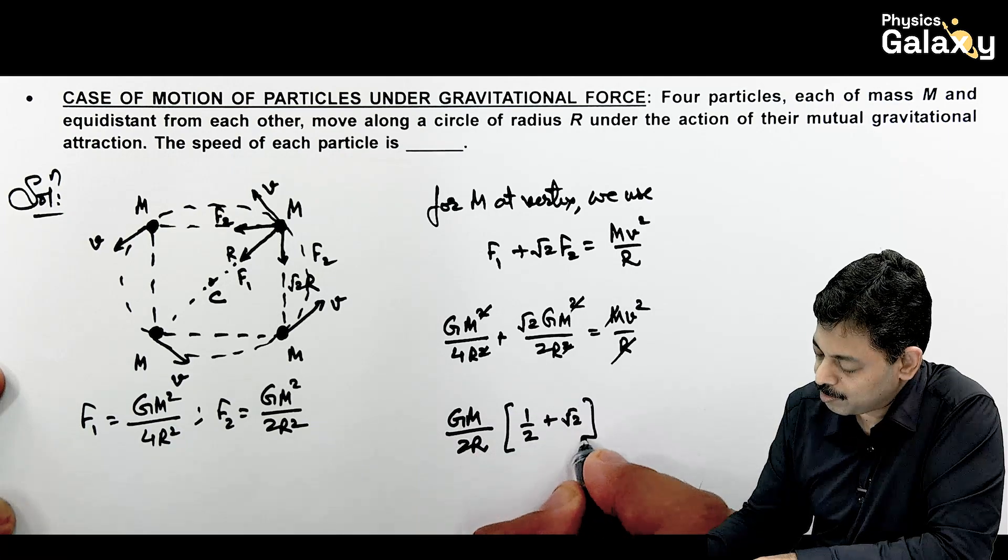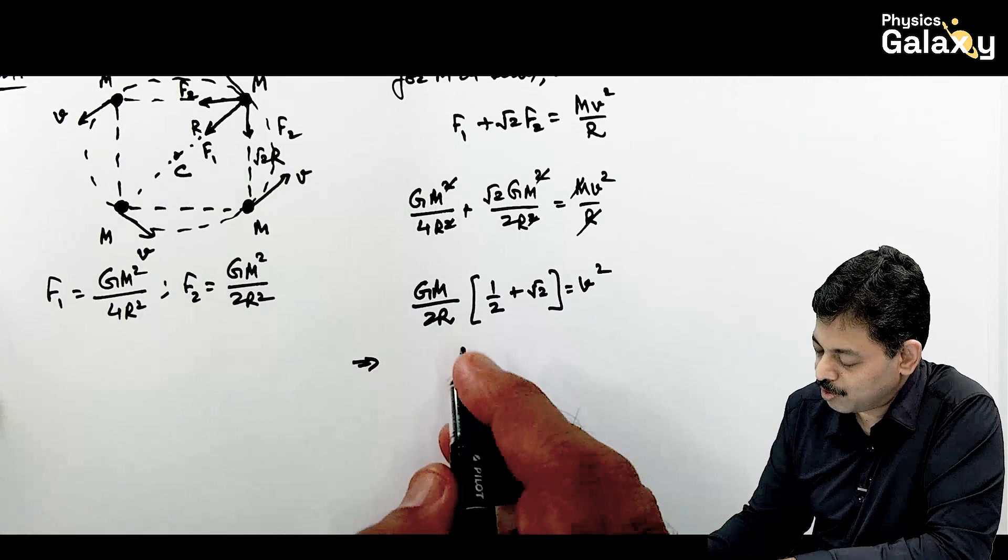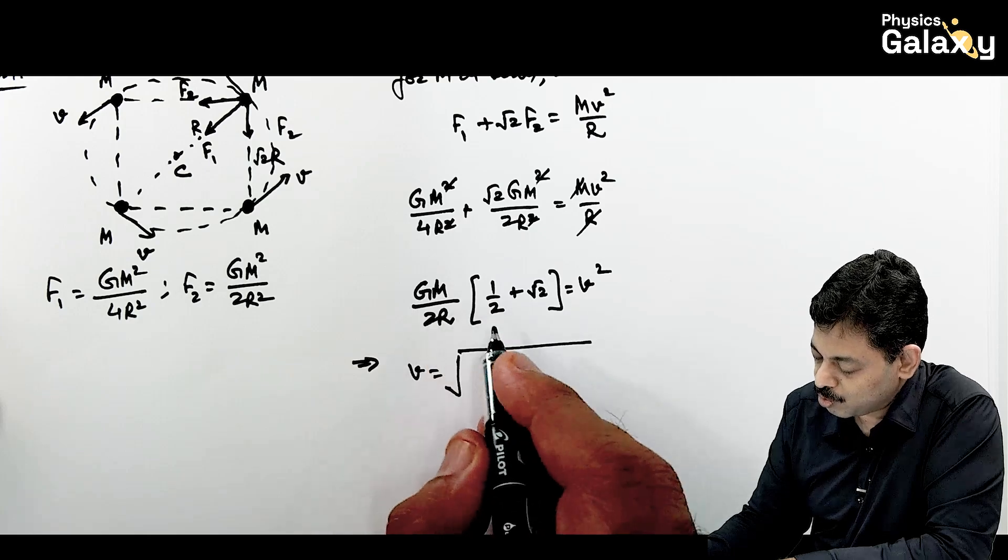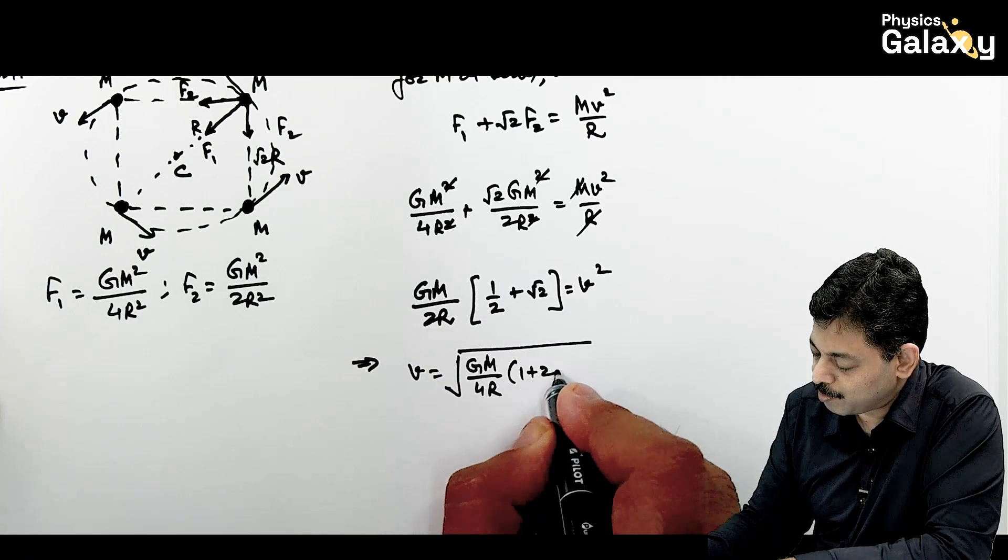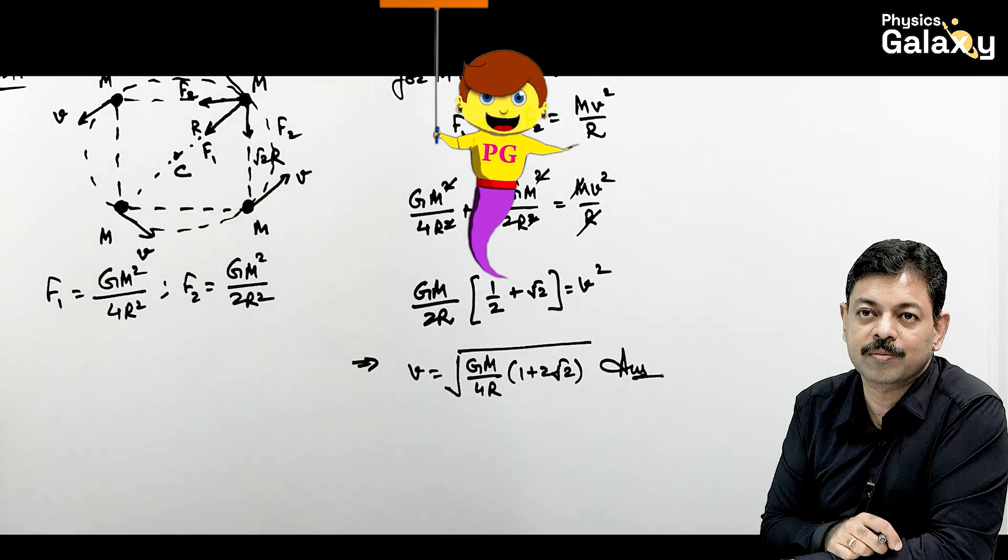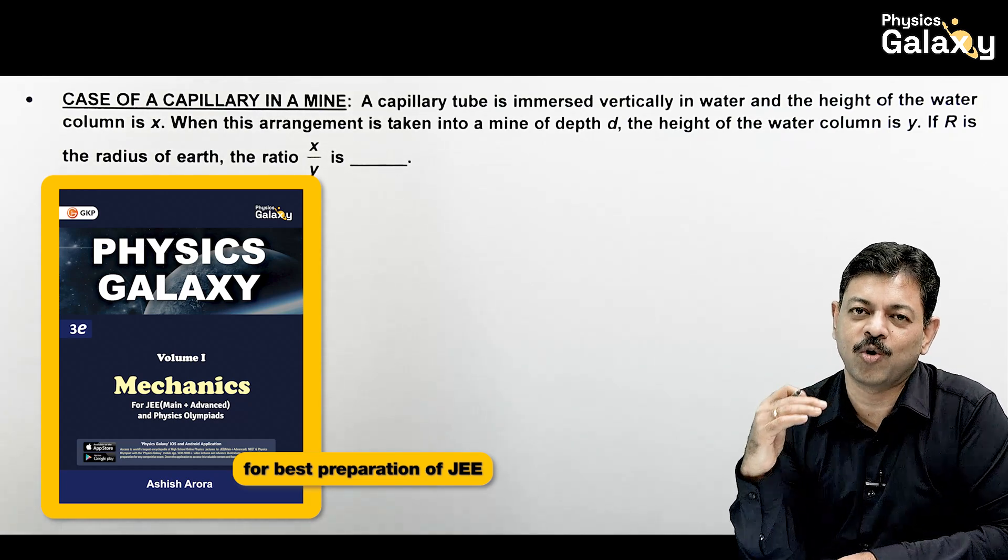And here inside this will be 1 by 2 plus root 2 times v squared. So here simplifying this gives us a value of speed v. And this can be written as root of, again this 2 can also be taken out, Gm by 4R multiplied by 1 plus 2 root 2. That is the answer for this problem.